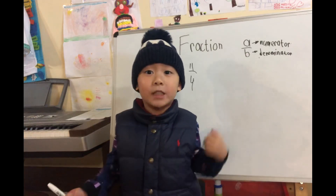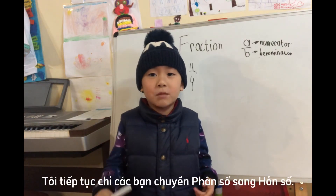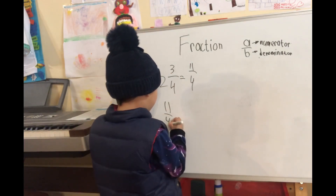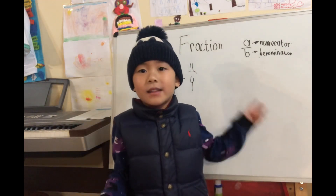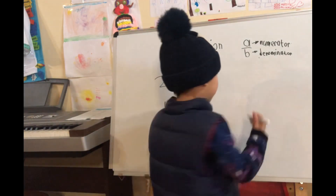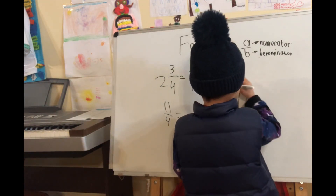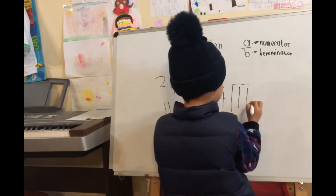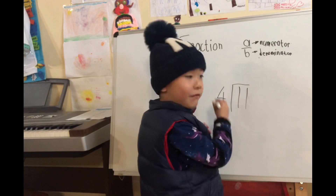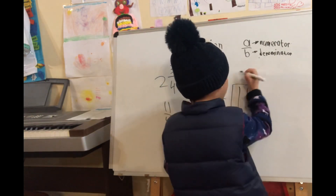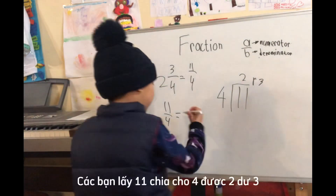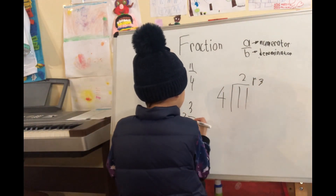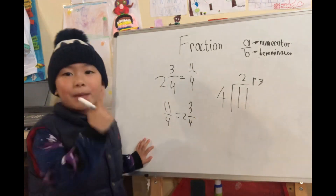Now I will teach you about converting improper fraction back to mixed. You take 11 over 4. Equal... you take 11 divide by 4. So 11 divide 4 equals 2. It remains 3. And over 4. So it looks like a mixed fraction: 2 and 3 over 4.